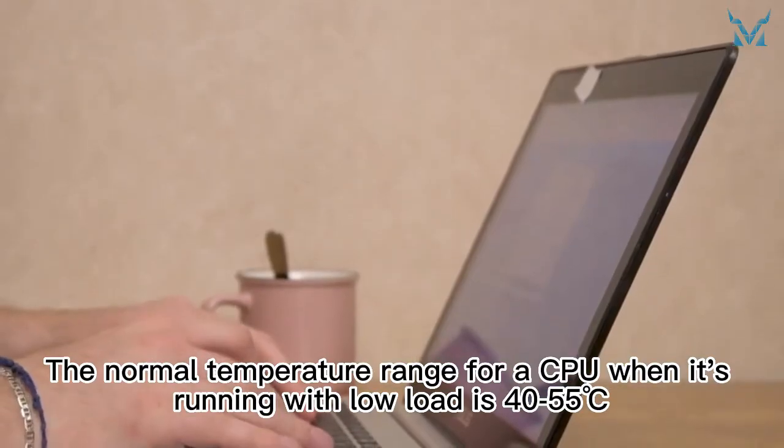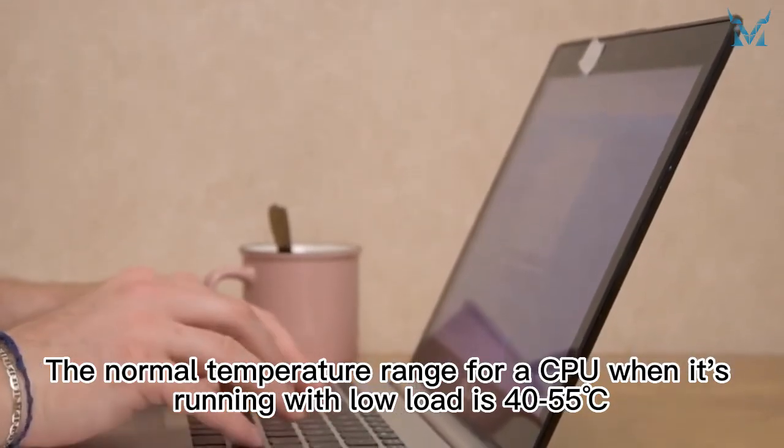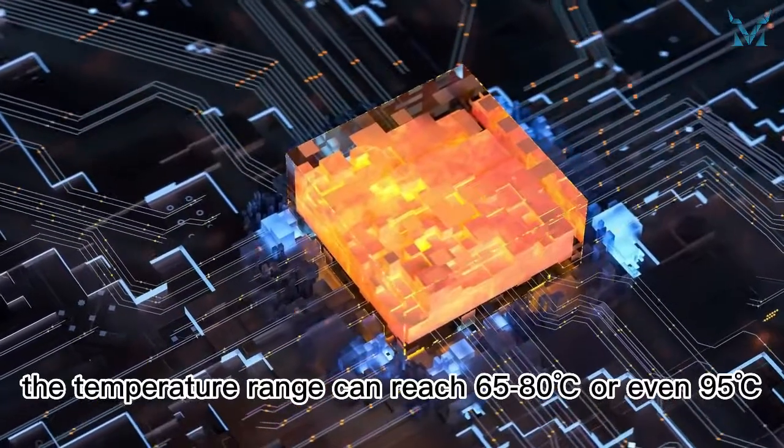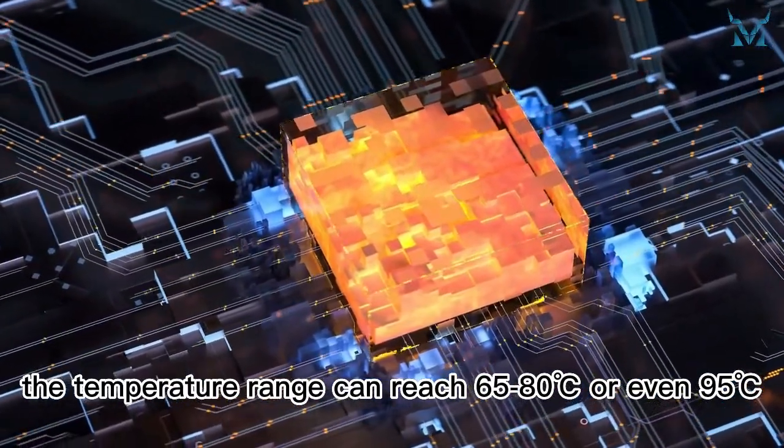The normal temperature range for a CPU when it's running with low load is 40 to 55 degrees Celsius, and when it's running with high load, the temperature range can reach 65 to 80 degrees Celsius or even 95 degrees Celsius.